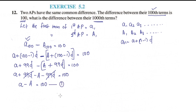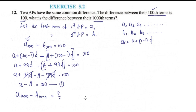Now, what is the difference between the thousandth terms? The thousandth term of the first AP minus the thousandth term of the second AP — that is the difference between the thousand terms we need to find.